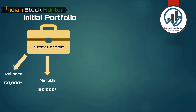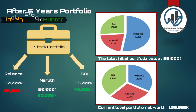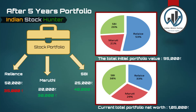Mr. Amrish bought three different stocks: Reliance, Maruti, and SPI. He put rupees 50,000 in Reliance, rupees 20,000 in Maruti, and rupees 25,000 in SPI. After five years, the current values of these investments in Reliance, Maruti, and SPI are rupees 35,000, rupees 30,000, and rupees 40,000. By looking at the pie charts we can easily conclude that Reliance generated less returns compared to Maruti and SPI in the last five years.